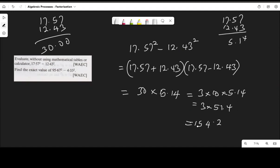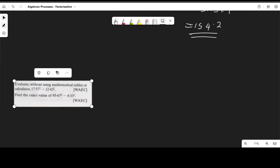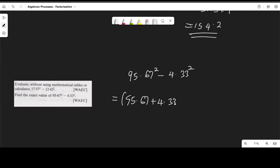The next problem is to find the exact value of 95.67 square minus 4.33 square. Applying the difference of squares formula: 95.67 plus 4.33, multiplied by 95.67 minus 4.33.